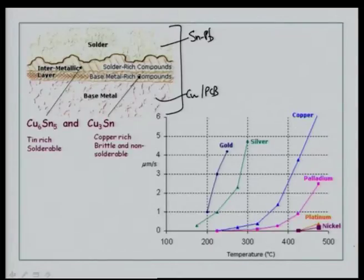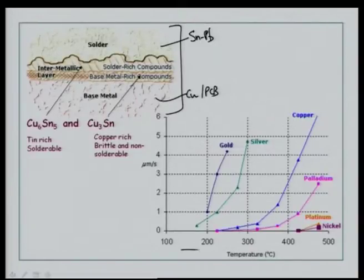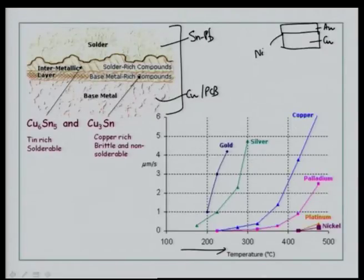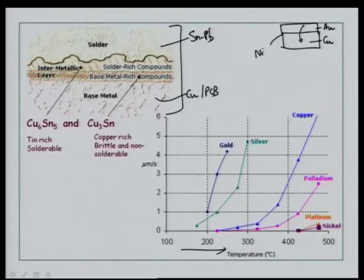Initially there will be a particular phase composition or compound, and if the board has been used for a longer time and you analyze the layer thicknesses, there will be differences. The intermetallic growth phenomenon is continuous, and if the board is subjected to higher temperatures the growth rate is very high. A graph of temperature versus microns per second growth rate shows that as temperature increases, the growth rate for copper is fairly high, and similarly for gold, silver, palladium, platinum, and so on.